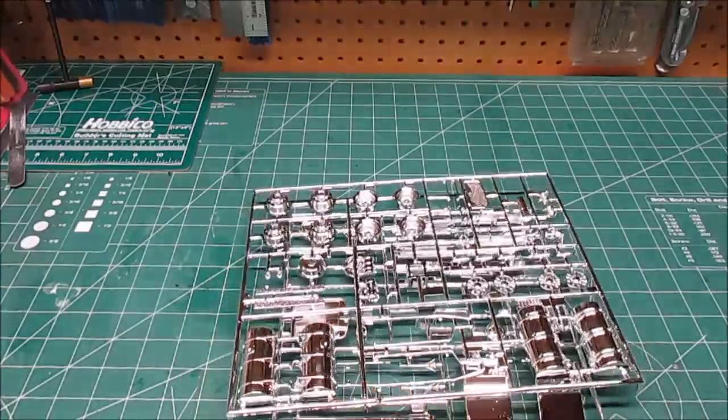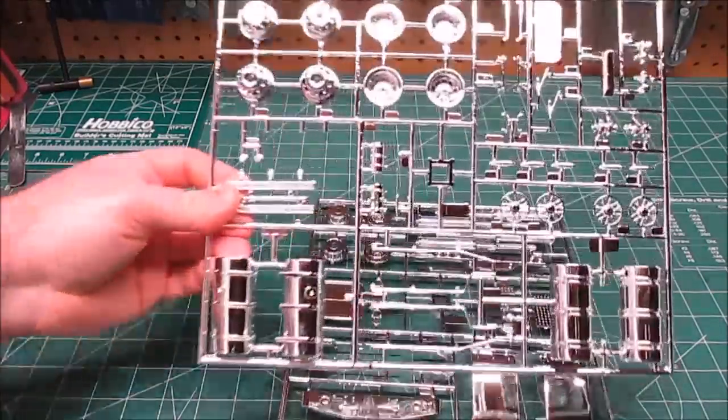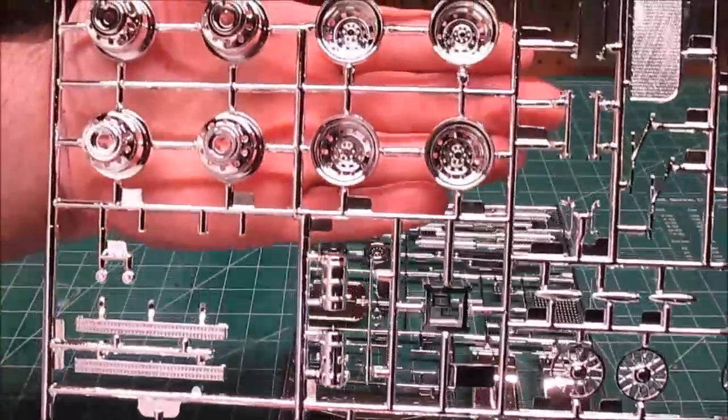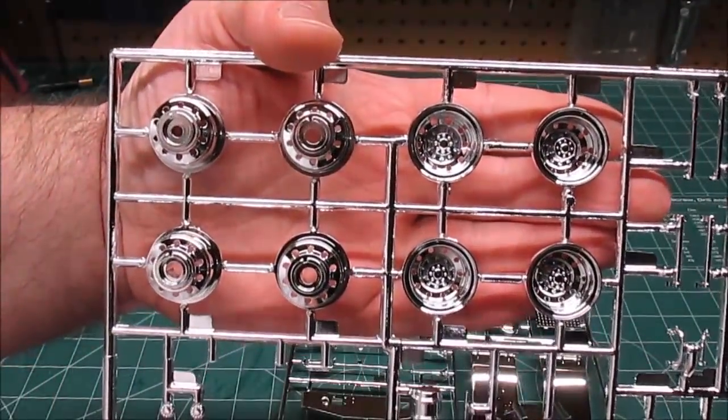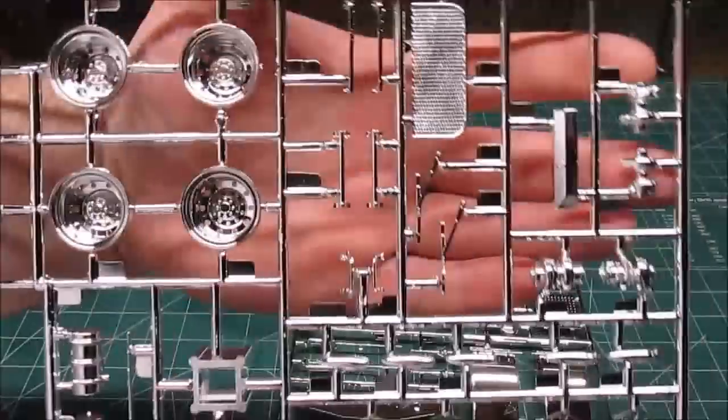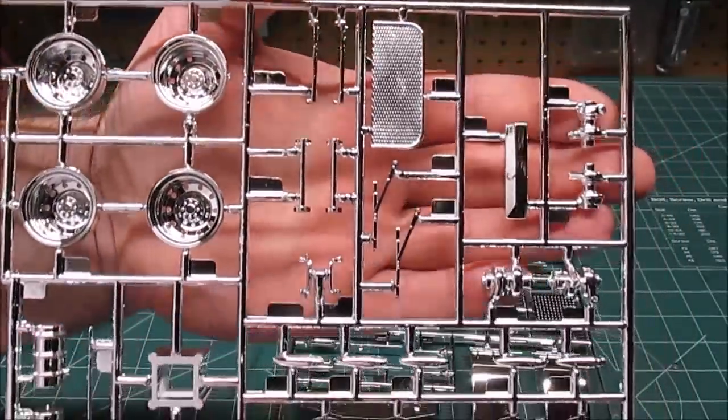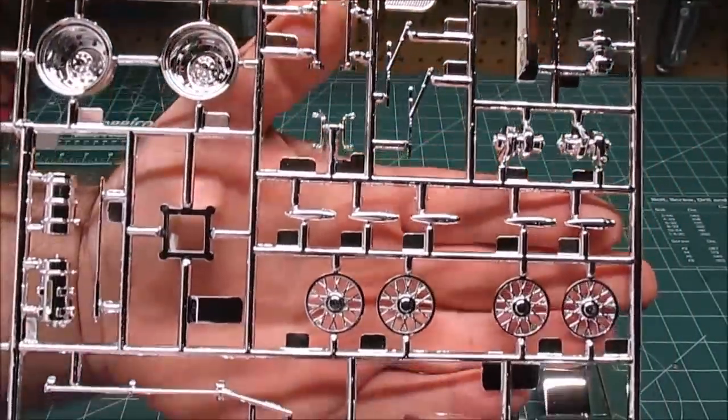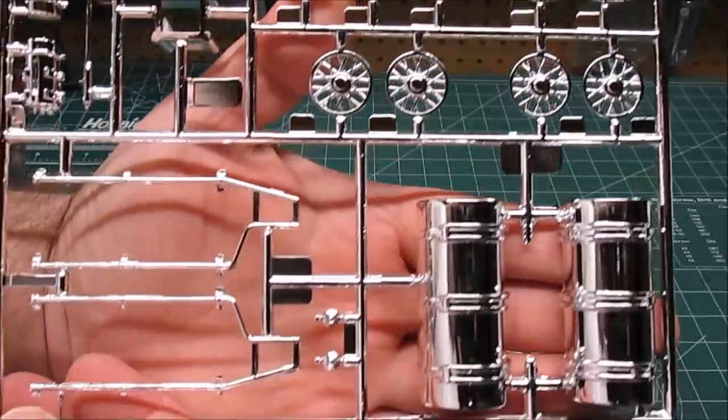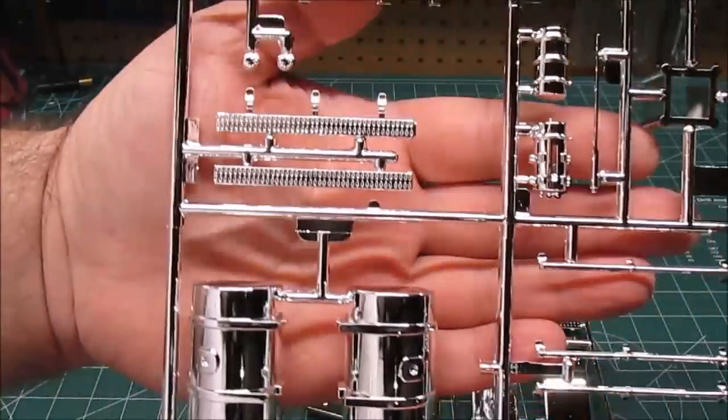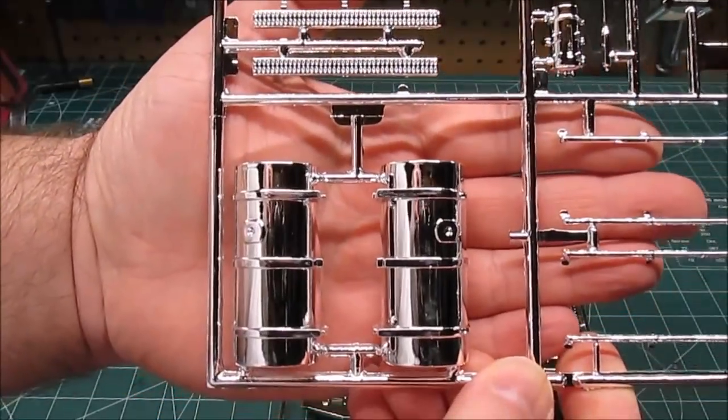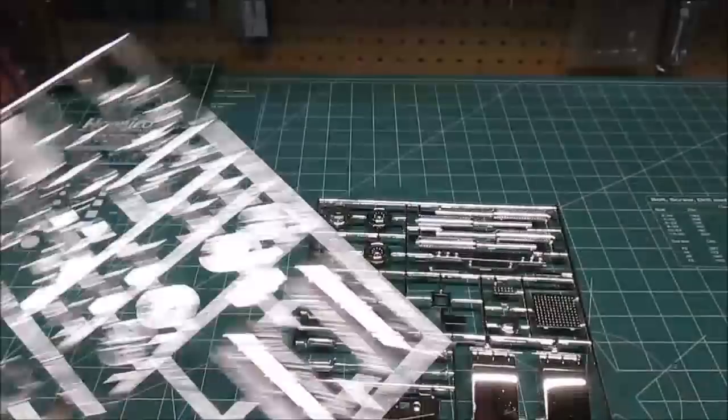First up we're going to take a look at all the chrome parts, and there are a lot of them. Look at those wheels, delicious. We've got grills, grab handles, tanks, overhead lights, all beautiful chrome. Look at those rails, look at those steps.